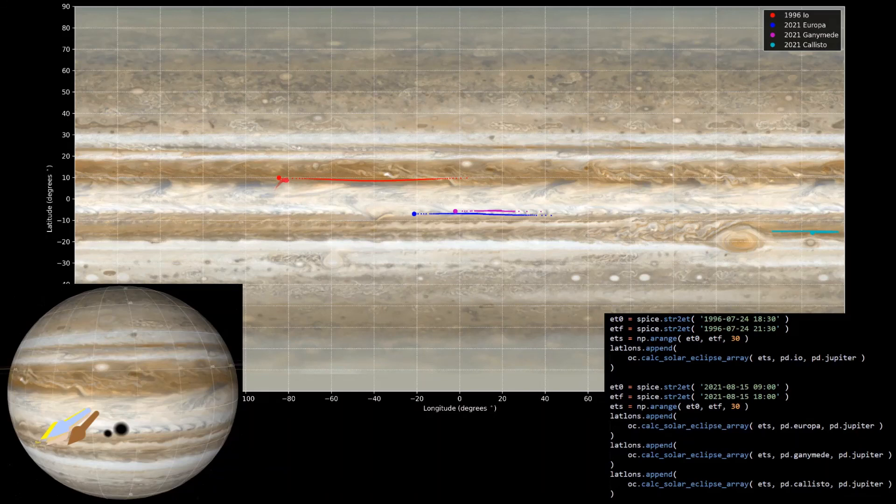And here is an example of the 1996 Io eclipse in the red that Hubble actually got a picture of, which I'll have a link in the comments to go see it. On the bottom left is a screenshot from Cosmographia, not a real image. And then the triple eclipse, which happened earlier this year, 2021, August 15, of Europa, Ganymede, and Callisto, which was also visible from Earth.